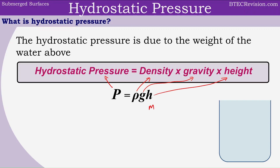The units are meters for height, gravity is measured in newtons per kilogram, density is measured in kilograms per meter cubed, and pressure is measured in newtons per meter squared. Another unit for that is also pascals.